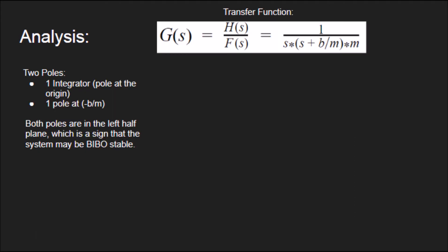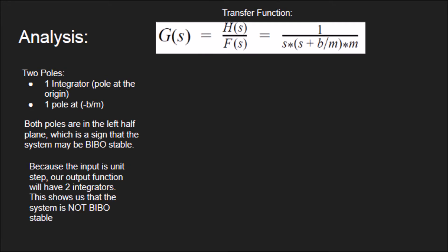The open loop transfer function has no zeros and two poles. The first pole is an integrator, so it's at the origin, and the second pole is in the left half plane that's dependent on the ratio between the damping coefficient and the mass of the drone.